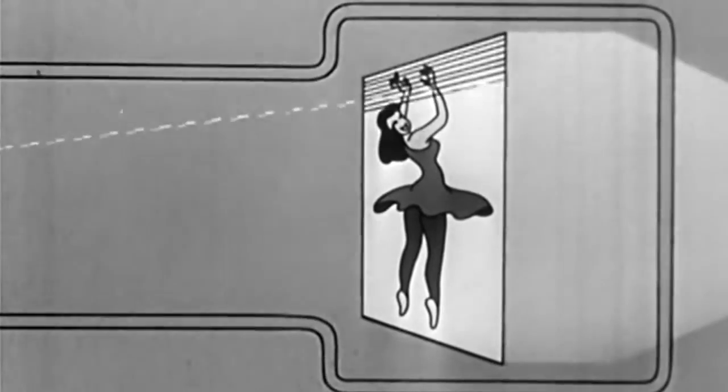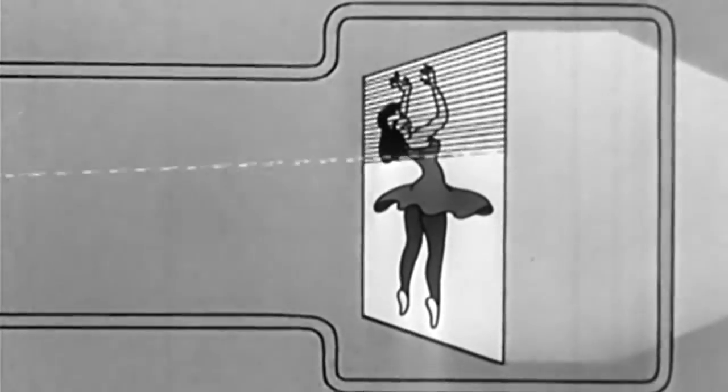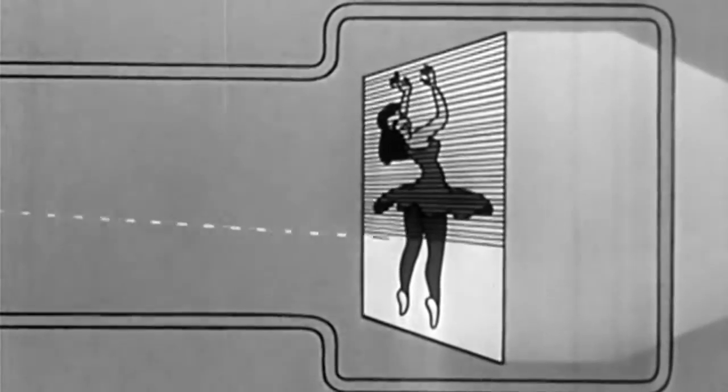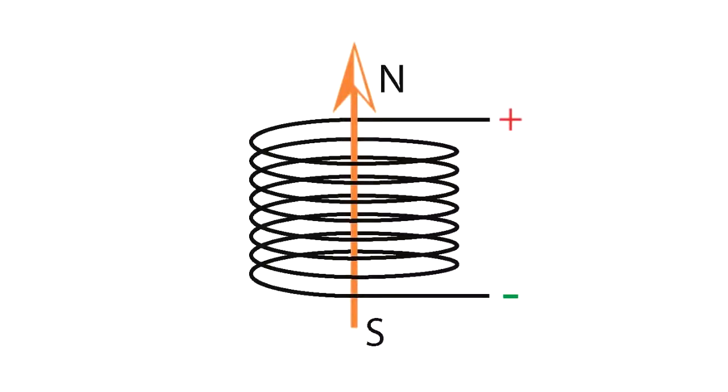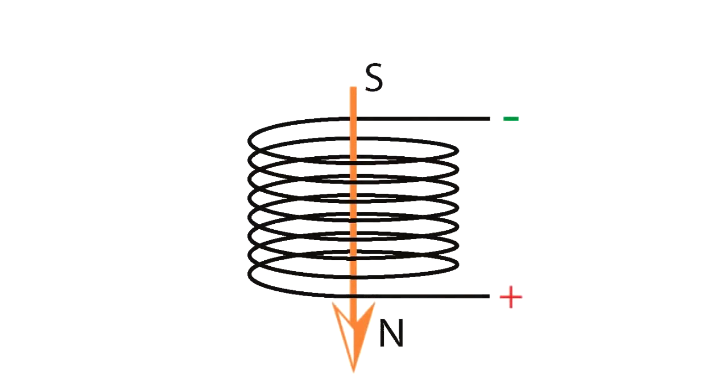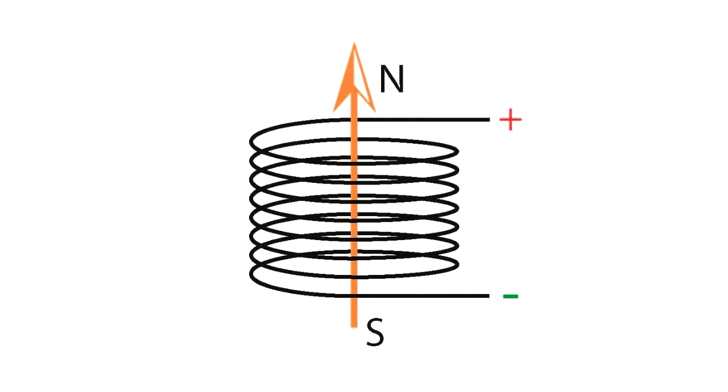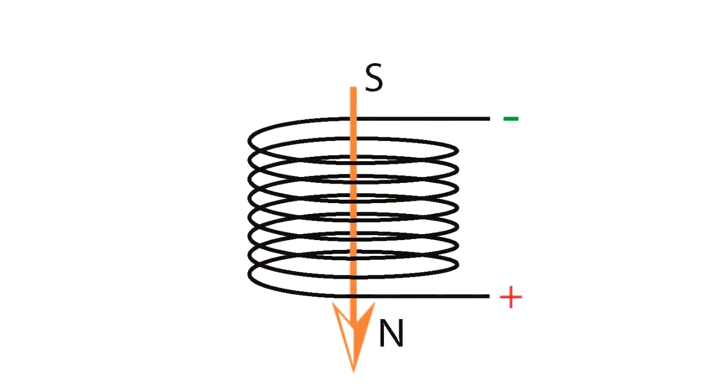The electron beam was moved left to right and top to bottom to cover the entire surface of the photosensitive plate by two coils of wire around the camera tube. If we apply a voltage to a coil of wire, that coil becomes an electromagnet. Since electron beams are attracted and repelled by magnetic fields, that meant the electron beam could be moved around the plate.